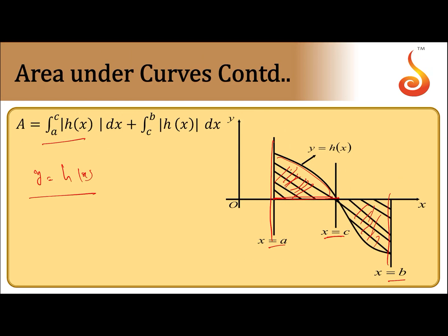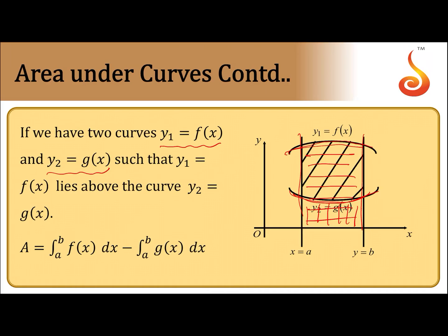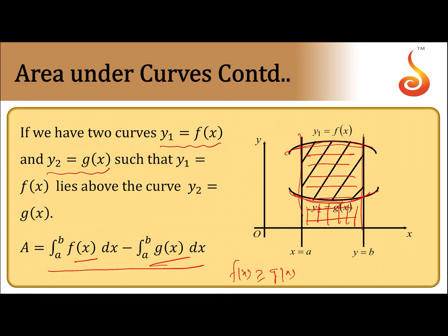Area between two curves: when given two curves y = f(x) and y = g(x) between x = a and x = b, the area between them is given by integral from a to b of [f(x) − g(x)] dx, provided f(x) ≥ g(x) for all x in the closed interval [a, b]. If one curve crosses another, we take the modulus as in the previous case.